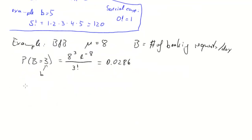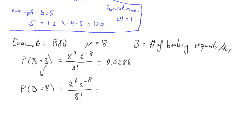Let's calculate a second probability just for practice. What's the probability that they get exactly 8 booking requests? That's going to be 8 to the power of 8, times e to the negative 8, divided by 8 factorial. Note that it just so happens that in this case both mu and b are the same value. If you calculate this, you find that we get 0.1396.